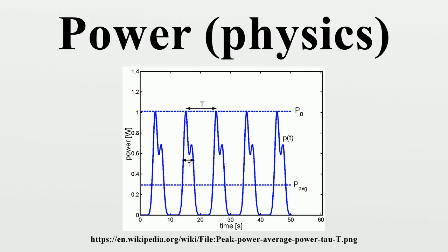In the case of a periodic signal of period T, like a train of identical pulses, the instantaneous power is also a periodic function of period T. The peak power is simply defined by the formula. The peak power is not always readily measurable, however, and the measurement of the average power is more commonly performed by an instrument.